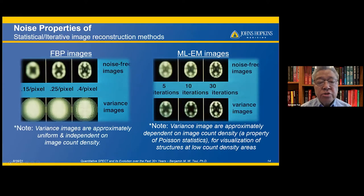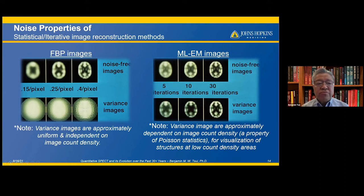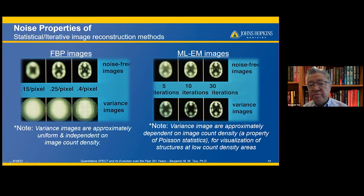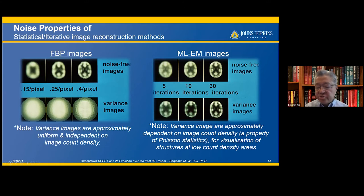This slide shows the comparison between filter back projection images and ML-EM images. For filter back projection, the variance image is approximately uniform and independent of image count density, meaning noise fluctuation is the same across the image. However, in the ML-EM algorithm, the variance depends on the image count density, making it better for visualizing structures in low-count-density areas — a very good reconstruction method for noisy images.